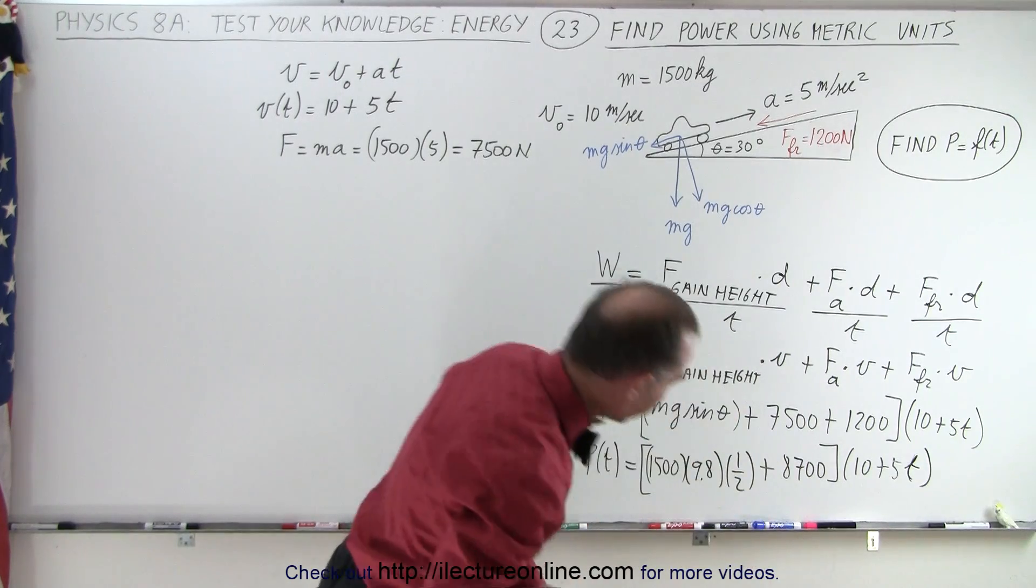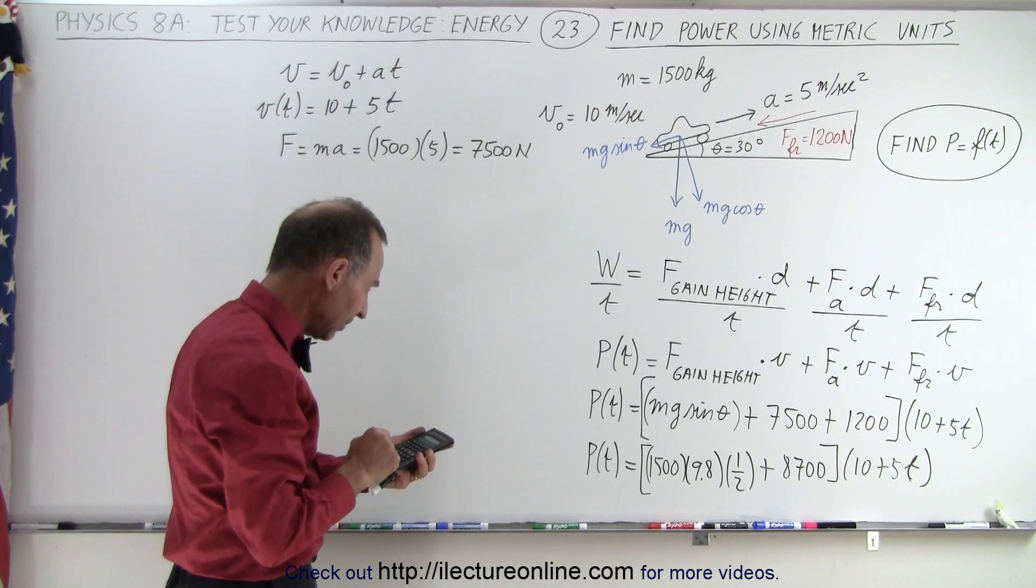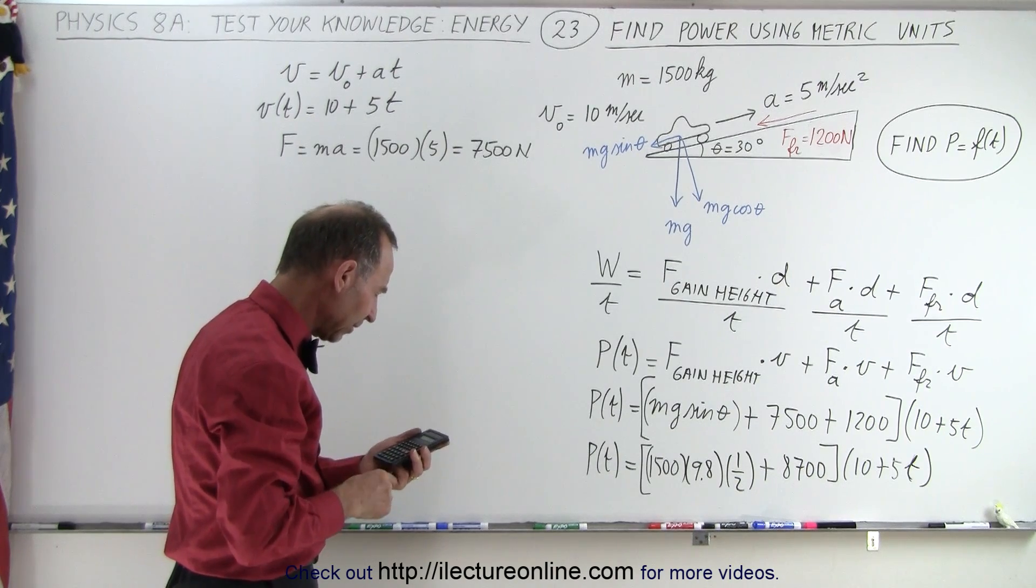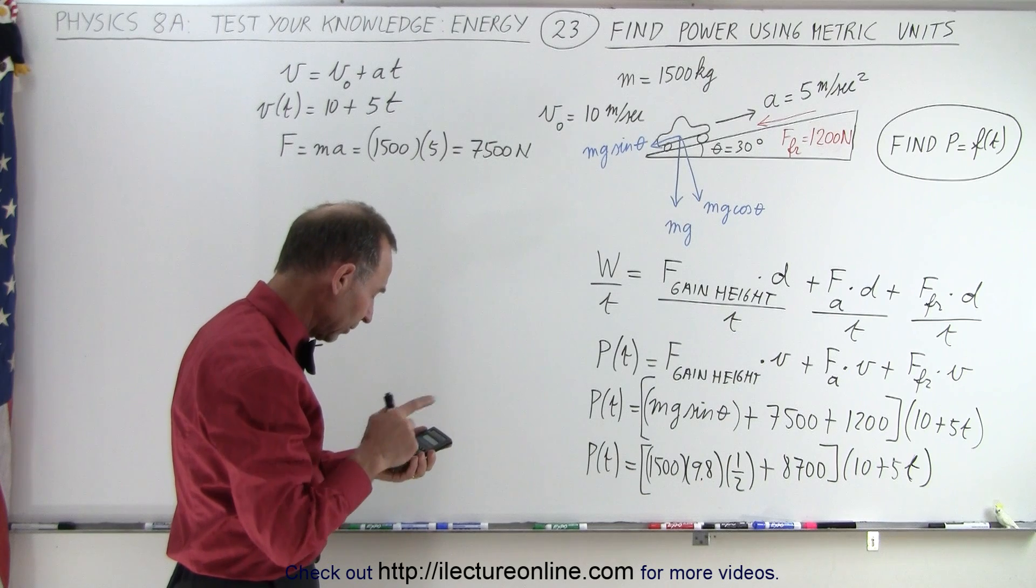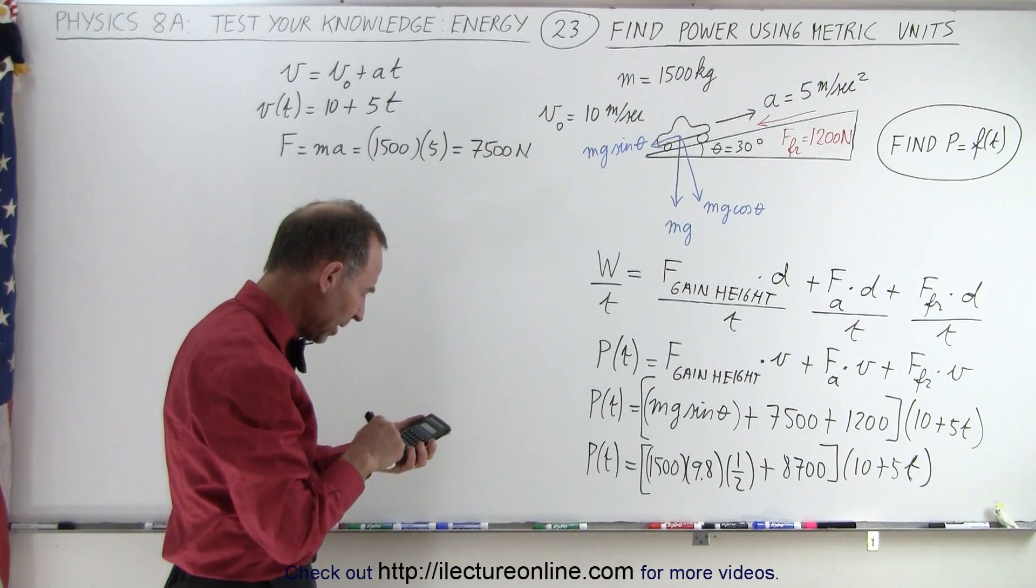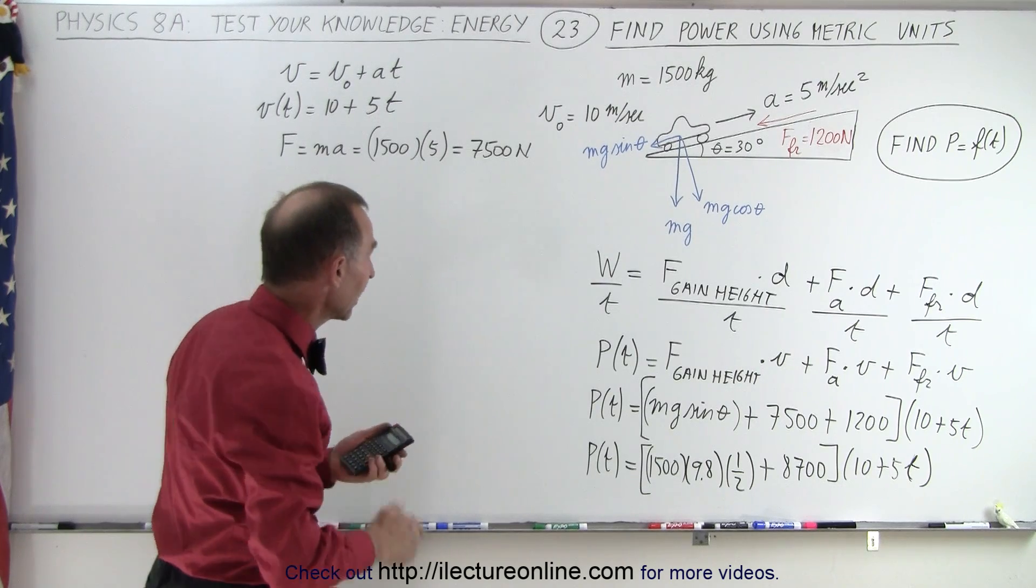So with a calculator, 1500 times 9.8 times 0.5 equals 7,350.